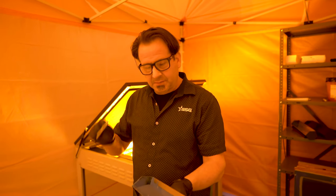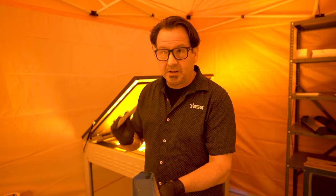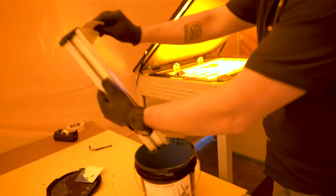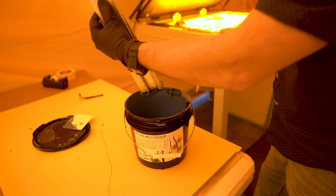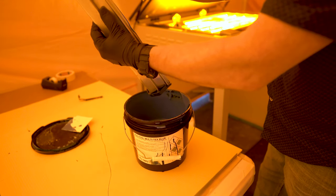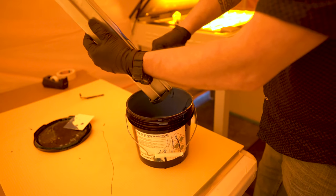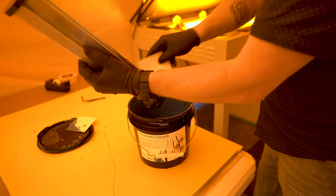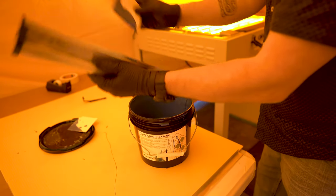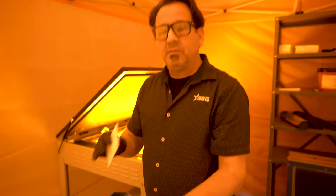Now that we're done coating our screens, the first thing we're going to want to do after we place our screens in the drying rack is go ahead and clean out our scoop coater. Then we'll go ahead and rinse this out and it's ready for our next use.